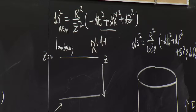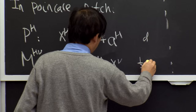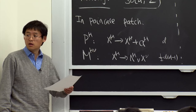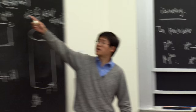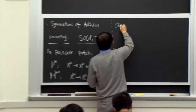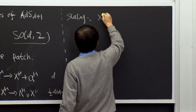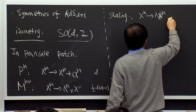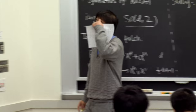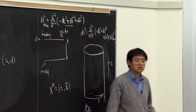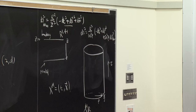There is also a scaling symmetry: if you scale x^μ and z together by a constant factor, then the metric does not change, because all the scalings cancel. This gives one additional generator.